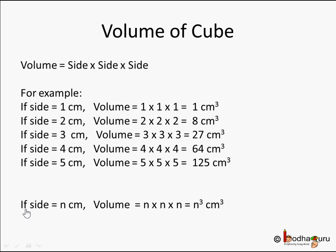In a general way, if the side of a cube is n centimeters, then its volume is n × n × n, which we represent as n³ — that is n multiplied by itself 3 times.